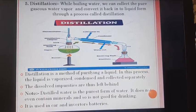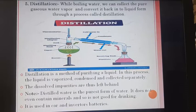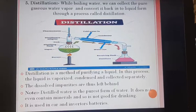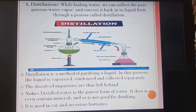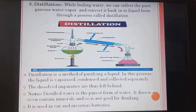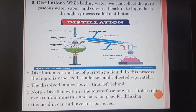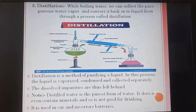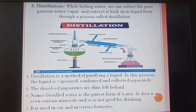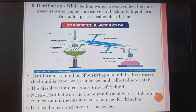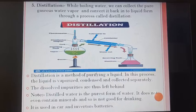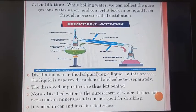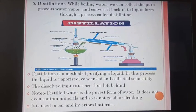Note: distilled water is the purest form of water. It does not even contain minerals and so is not good for drinking. It is used in car and inverter batteries. Observe the picture of distillation — here you can find the various apparatus used in this process, like a burner and beaker. The water is heated, water vapors are formed, and these vapors are cooled — this process is called condensation — and again we will get distilled water.